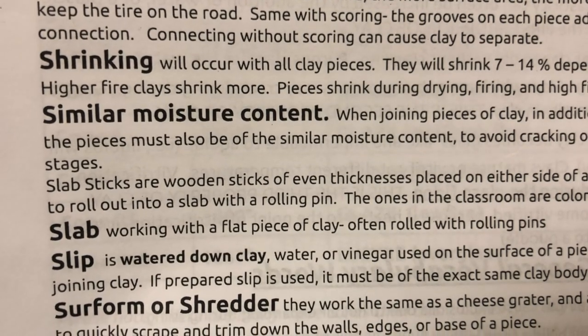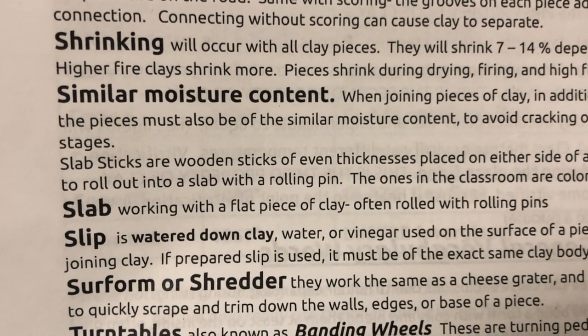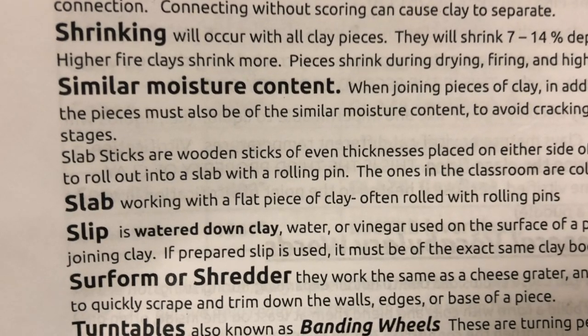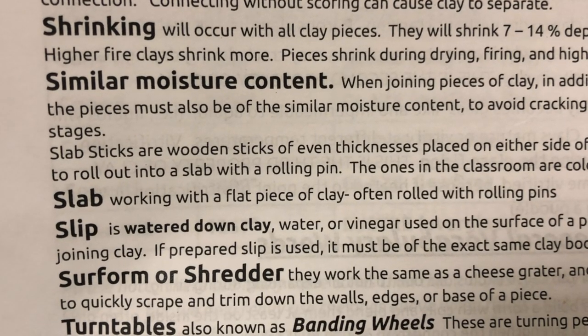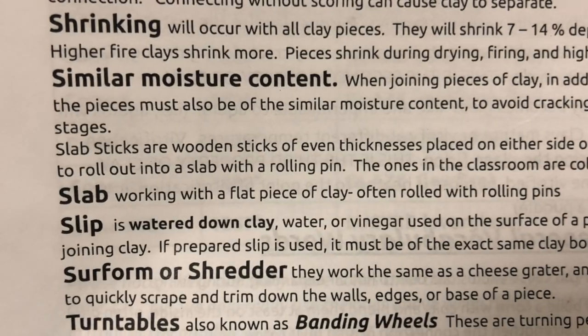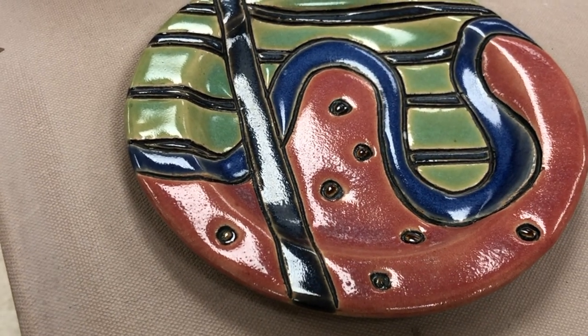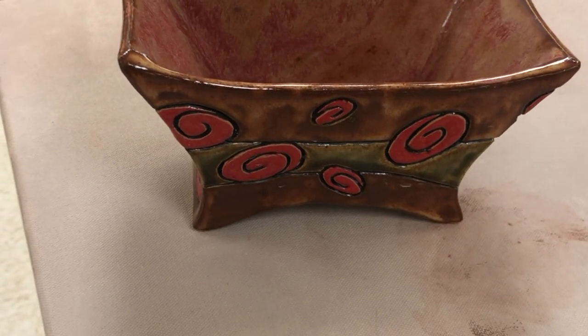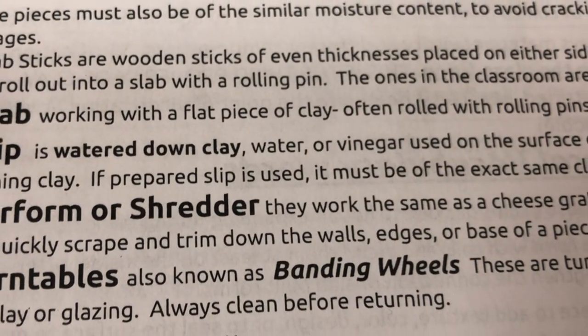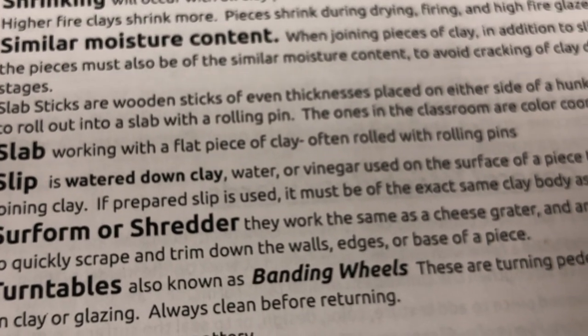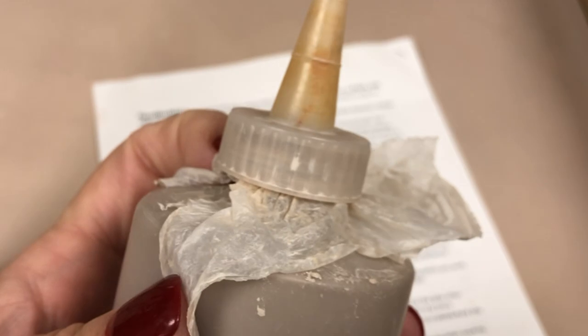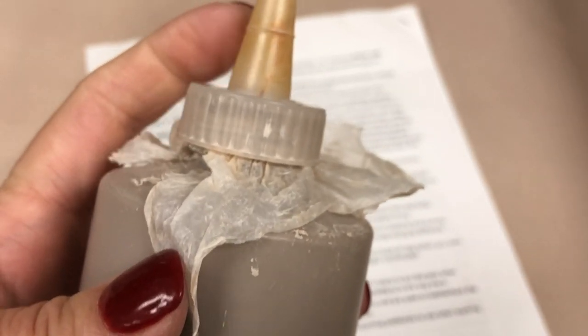Similar moisture content is important — clay should always be of similar moisture content when you attach pieces so they don't crack. Slab: in Ceramics 1 we do slabs a couple of ways — little plates and little slab forms — by rolling the clay out flat. Slip is basically watered-down clay that you can prepare in advance. I sometimes have squeezy bottles with slip for slip trailing.